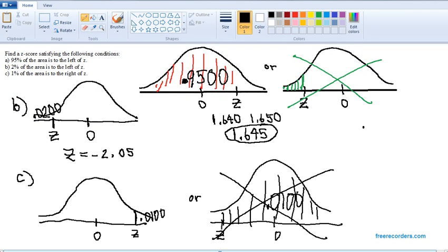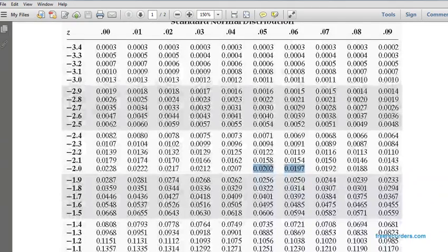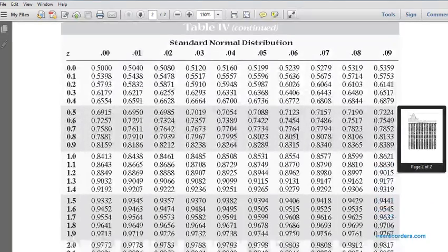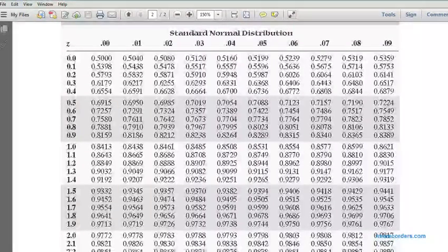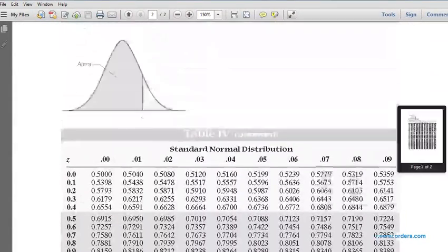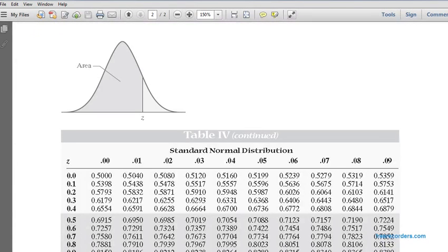So we have a z to the right of 0. We have a positive z, so we use the second page of our table, the one with positive z's. So we're looking in our table. Now, here's what you've got to be careful of. Remember, at the top of the table, it's reminding us that the areas in the table are the areas to the left of z.